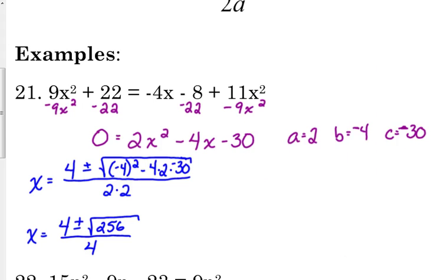So that gives us 4 plus or minus 16 over 4. And this is where our two answers are going to come from.